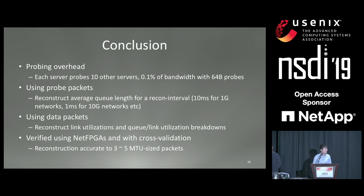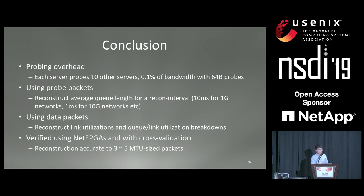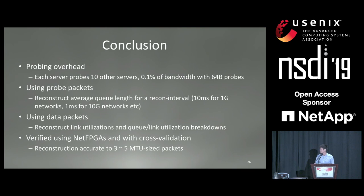A question from Dmitry Afonais from Yandex: you need to know the topology and specifically map packet headers to particular links, but data center networks typically use wide equal-cost multipath inside. The presenter confirms: in the Google Jupiter testbed they used traceroute to figure out the path for probe packets and were able to map packets precisely to links. The questioner raises a further concern: after a topology change and revert, hash mappings could still be changed, so nominally you have the same topology but packet mappings are no longer valid. The presenter acknowledges this is an interesting issue and the discussion is continued offline.